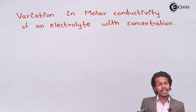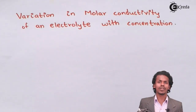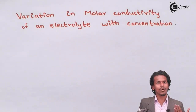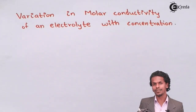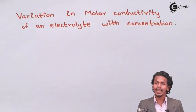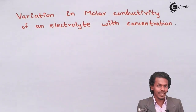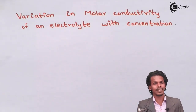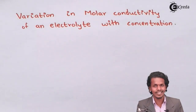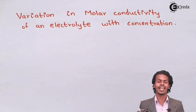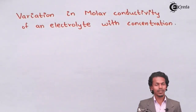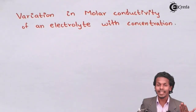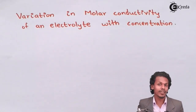When we learn about molar conductivity, we know that it increases with dilution. When it increases, the concentration has decreased and the volume of the solution has increased, because of which the cations and anions are being dissociated and hence the molar conductivity increases.